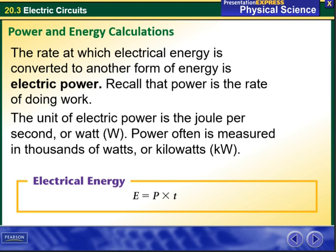The rate at which electrical energy is converted to another form of energy is electric power. Recall that power is the rate of doing work. The unit of electric power is the joule per second or watt. Power often is measured in thousands of watts, or technically meaning kilowatts. So we have here the equation energy equals power times time.